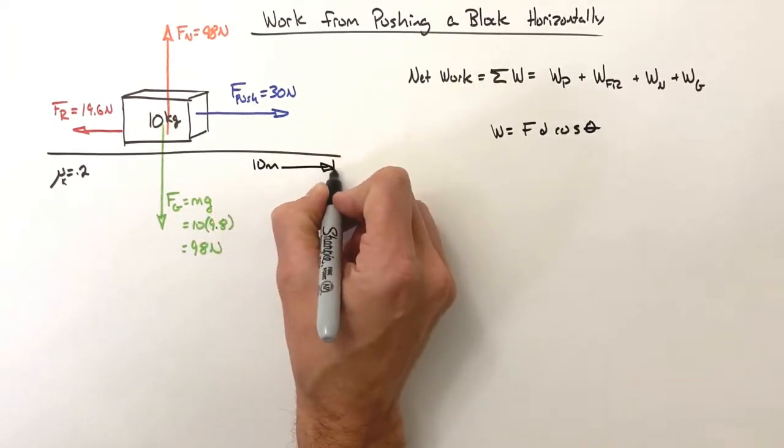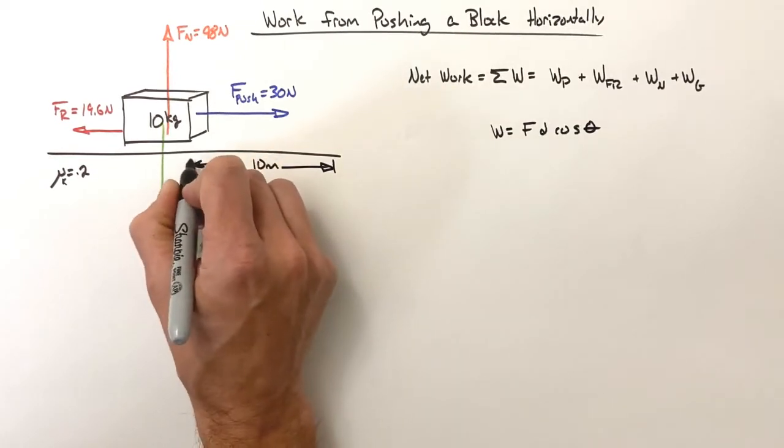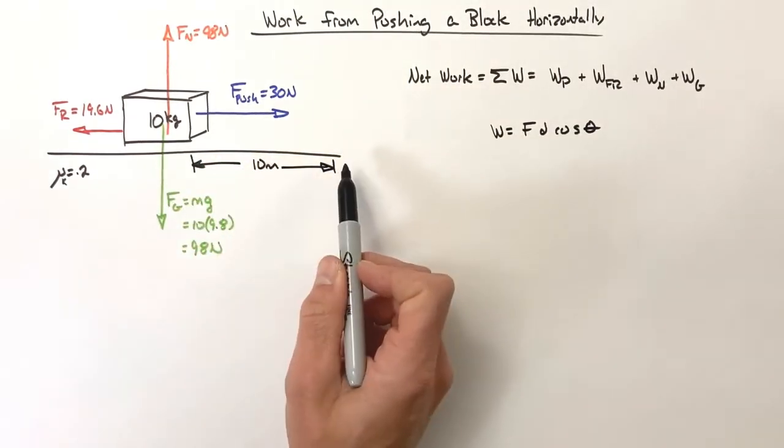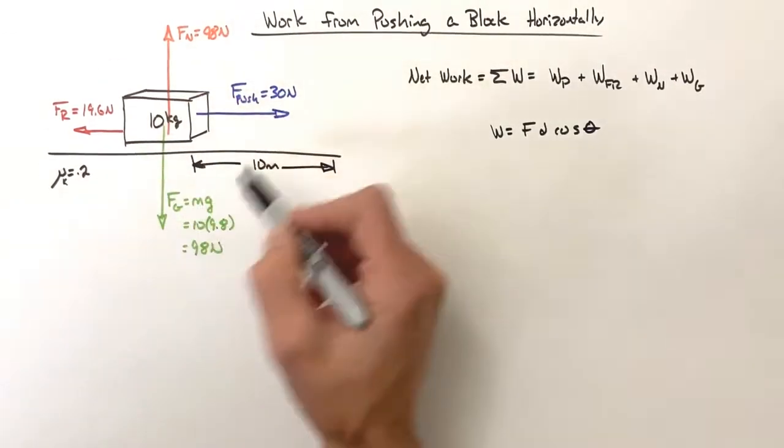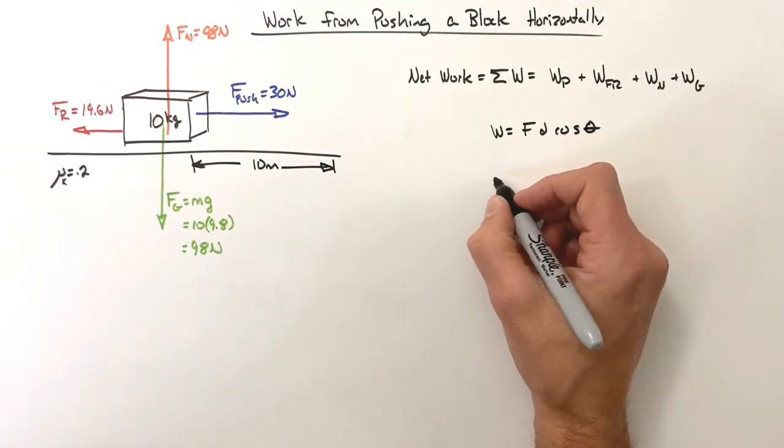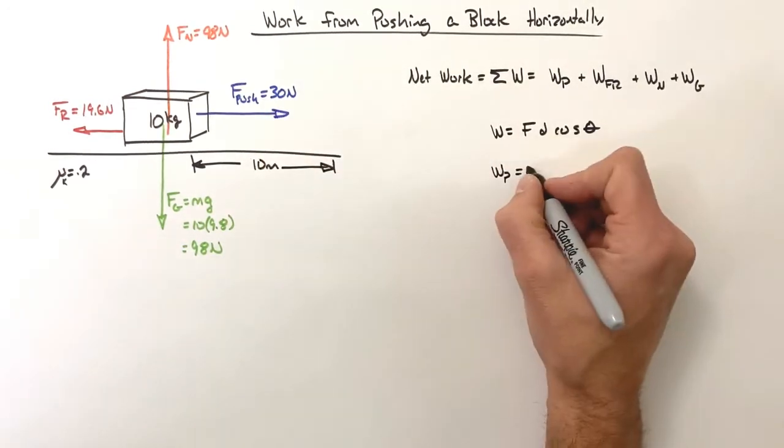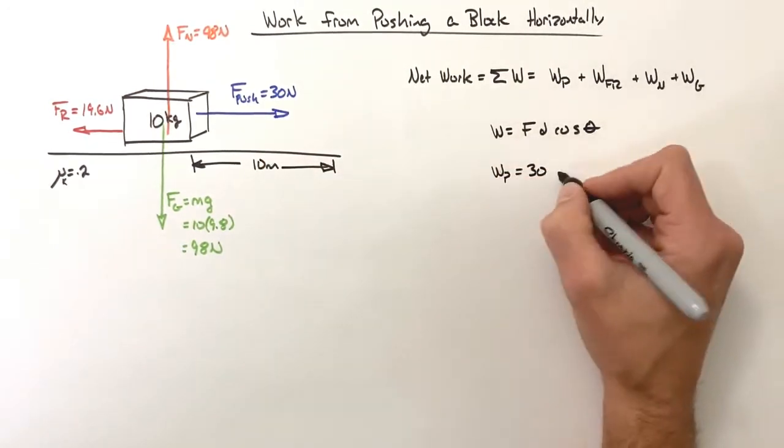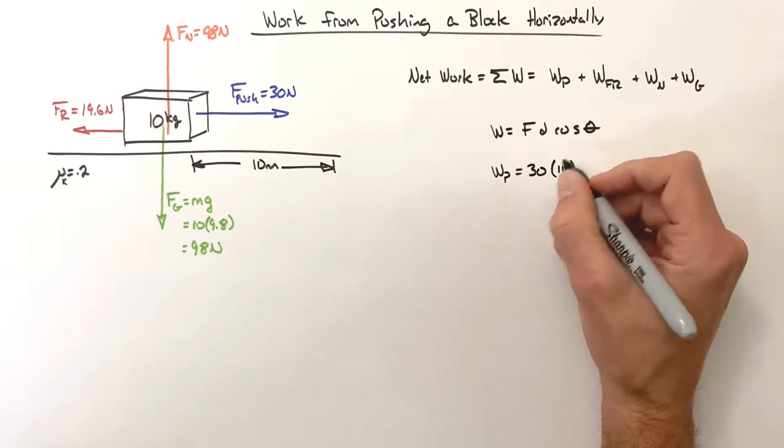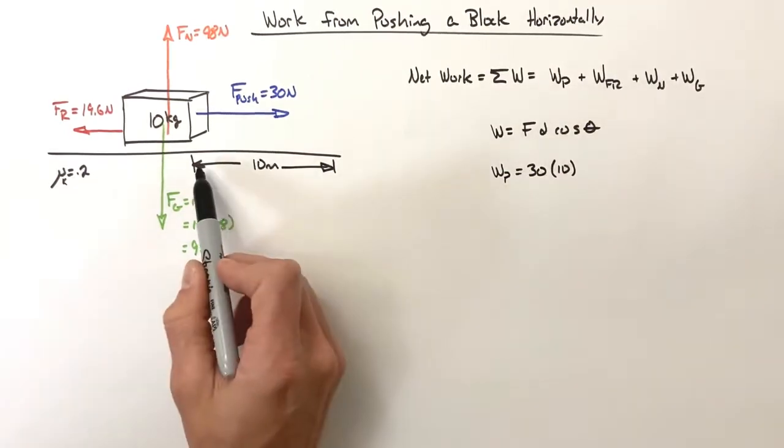So in this, as this block is pushed forward 10 meters, we want to know the total work done by each of these forces. So starting here, the work by the push force is the force—that's 30 newtons—times the displacement—that's 10 meters—times the cosine of the angle between them.